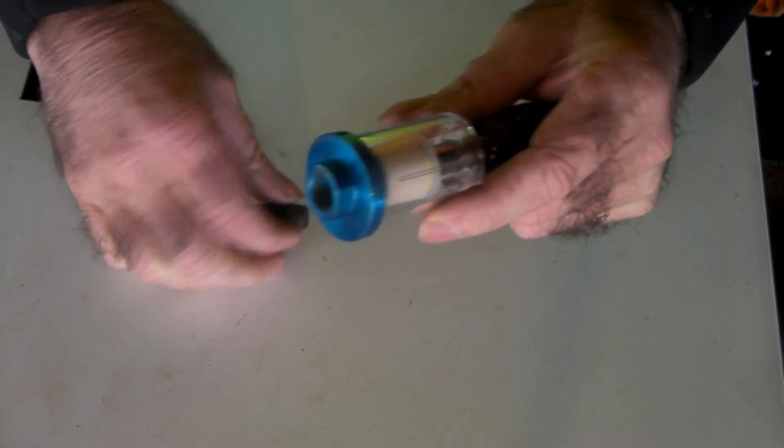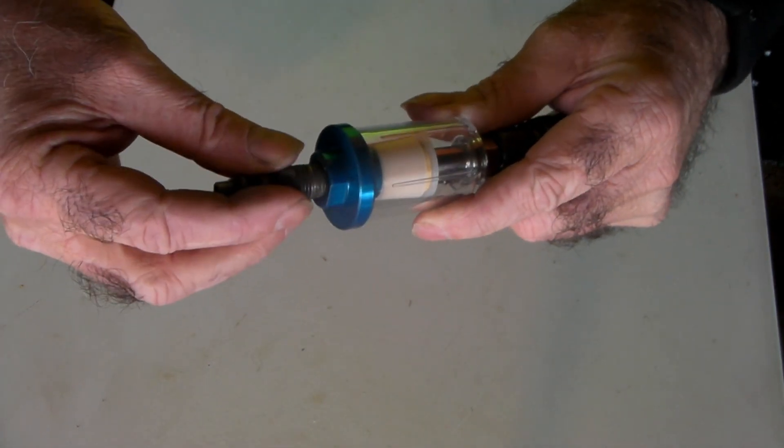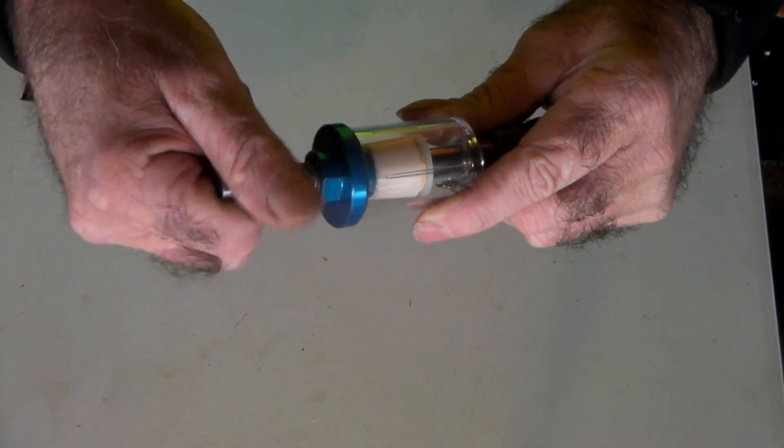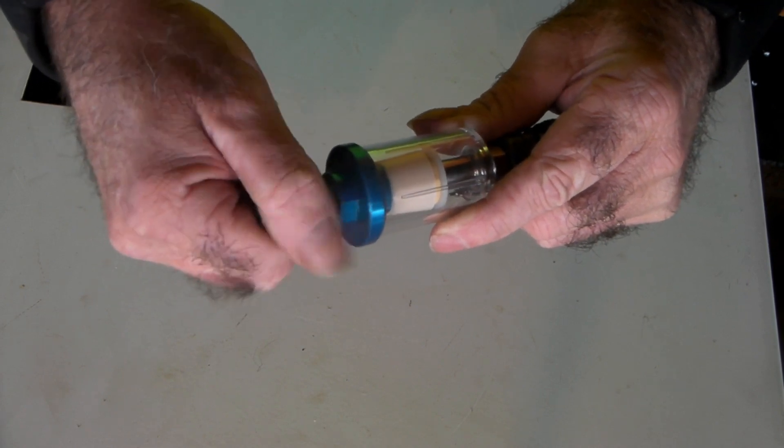Like so. Just tighten them up. I'll put thread seal tape on it of course, but we're not doing that here. You get the general gist of the idea, and then put that end in there like so.